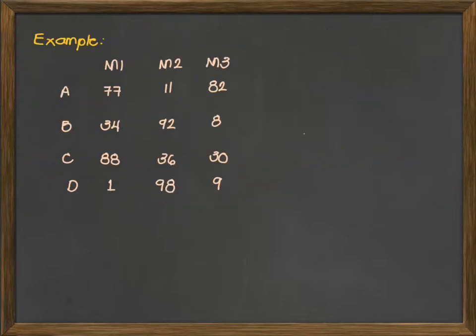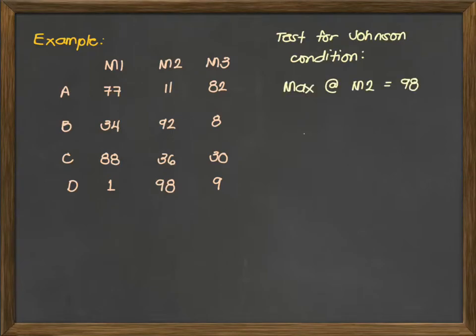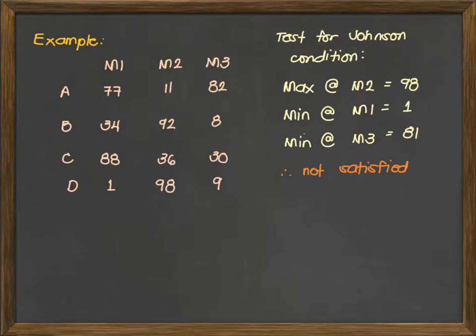For an example, we have 4 jobs, A, B, C, and D, and we have 3 machines. Since we only have 3 machines, we have to first test for the Johnson condition just to be sure. So again, Johnson's condition is maximum processing time of machine 2. We can see that this is 98. Minimum of machine 1 is 1, and the minimum in machine 3 is 8. We can see that this is not satisfied, so we cannot use the extended Johnson's algorithm which gives us the decision to just use the Palmer's rule or Palmer's heuristics.